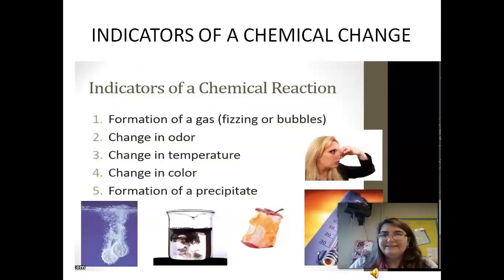Indicators of a chemical change: formation of a gas, bubbles, change in odor, change in temperature, change in color, and formation of a precipitate. These are the indicators that a chemical reaction has taken place.